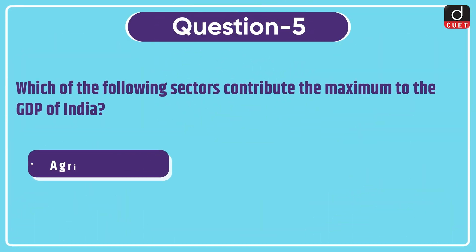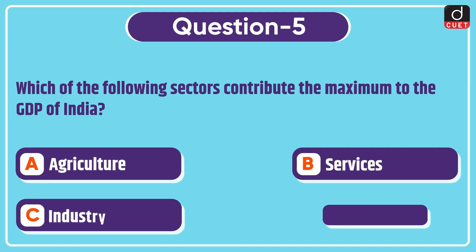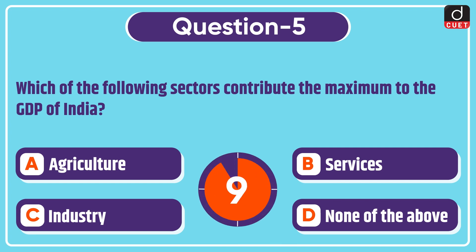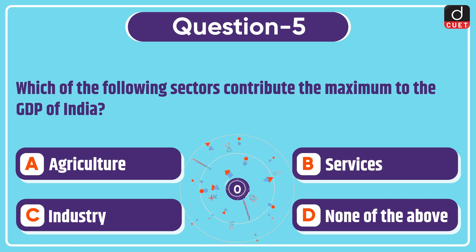Next question: which of the following sectors contributes the maximum to the GDP of India? Agriculture, services, industry, or none of the above? The correct answer is option B, services.